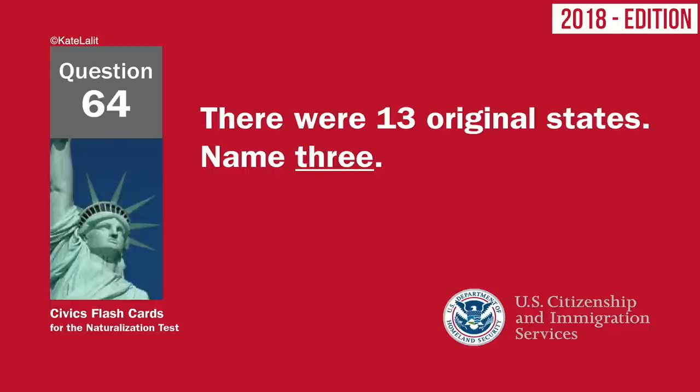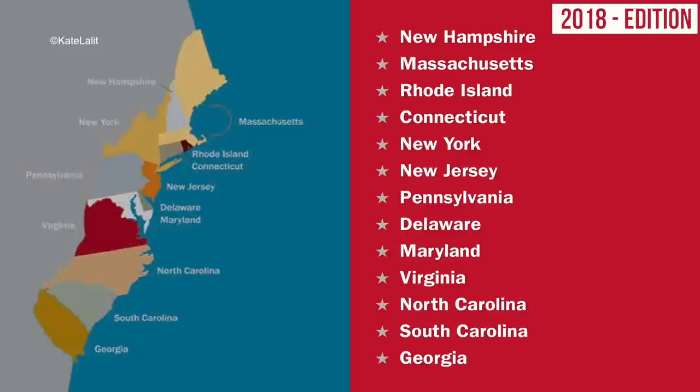There were 13 original states. Name three. New Hampshire. Massachusetts. Rhode Island. Connecticut. New York. New Jersey. Pennsylvania. Delaware. Maryland. Virginia. North Carolina. South Carolina. Georgia.